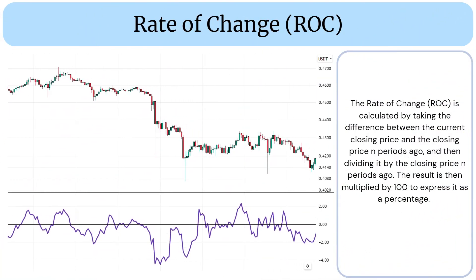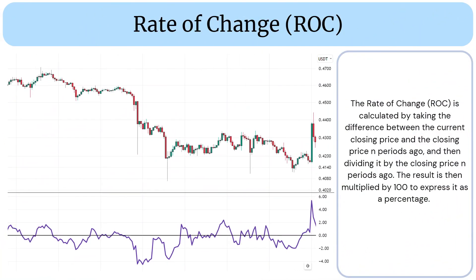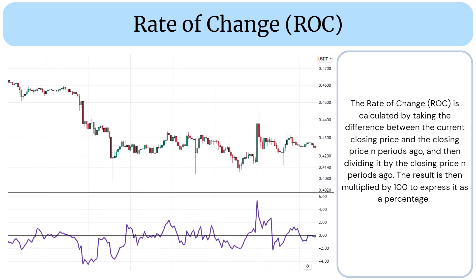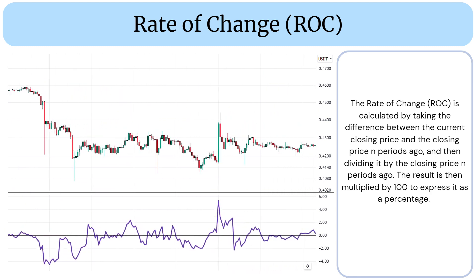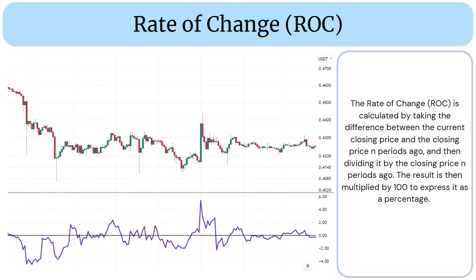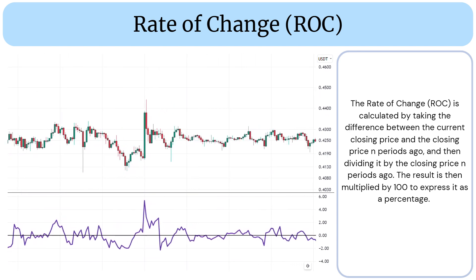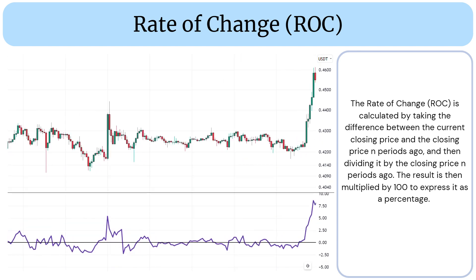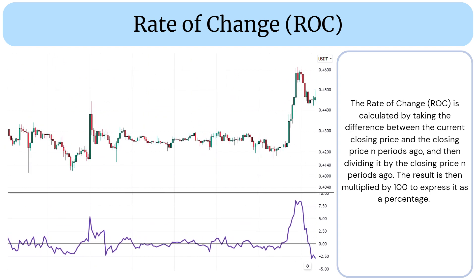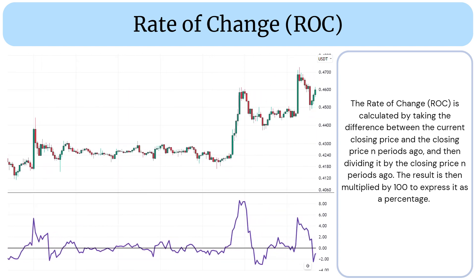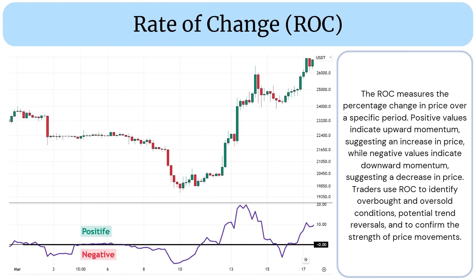The Rate of Change (ROC) is calculated by taking the difference between the current closing price and the closing price n periods ago, then dividing it by the closing price n periods ago. The result is then multiplied by 100 to express it as a percentage.